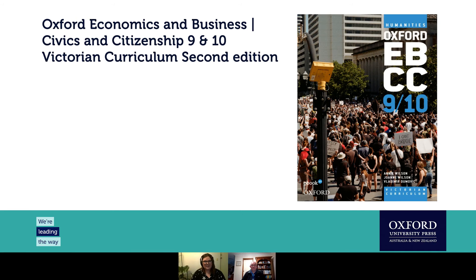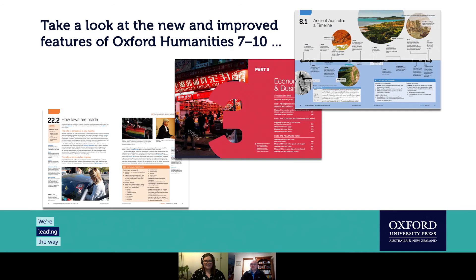This is very much a continuation of our much-loved Oxford Big Ideas Humanities series. We're excited to have moved away from the 'Big Ideas' phrase and go forward with these next editions proudly as just Oxford Humanities. You can see our brand new covers — we've moved away from faces on the covers and wanted to convey the idea of students living and breathing in the world of humanities. All humanities titles include geography, history, economics and business, and civics and citizenship from years seven to ten.